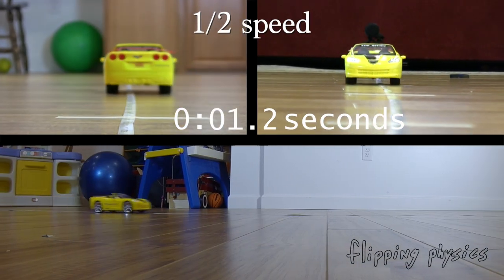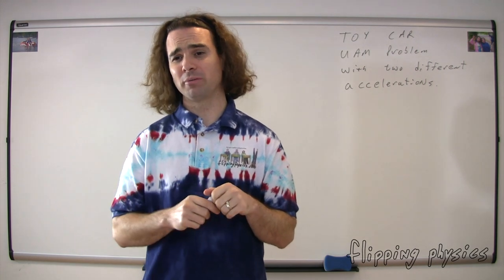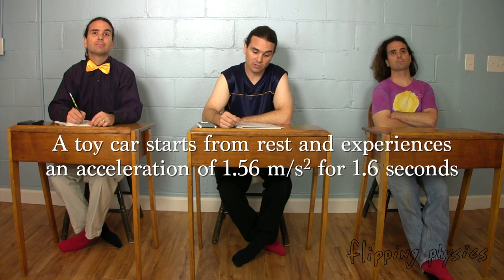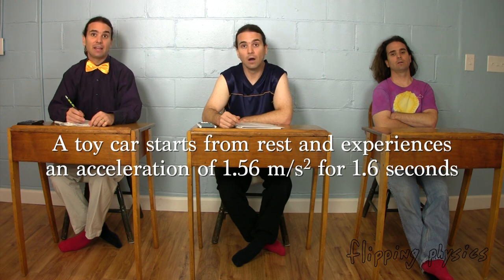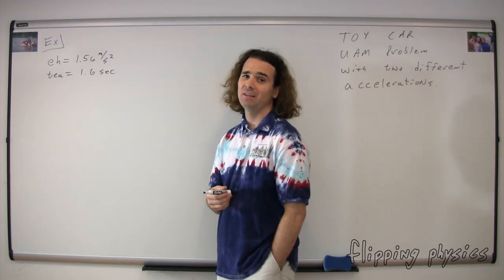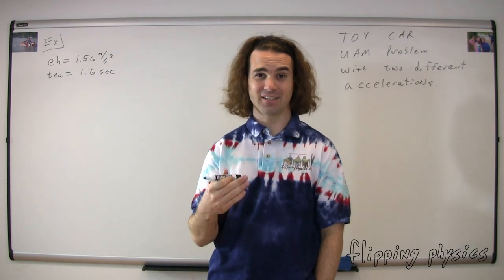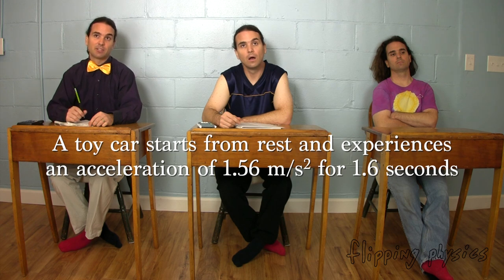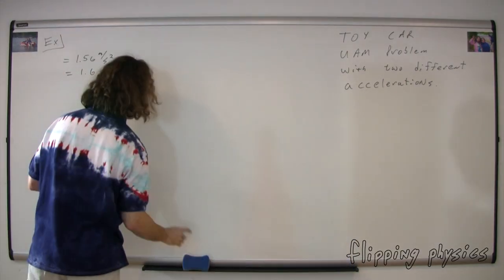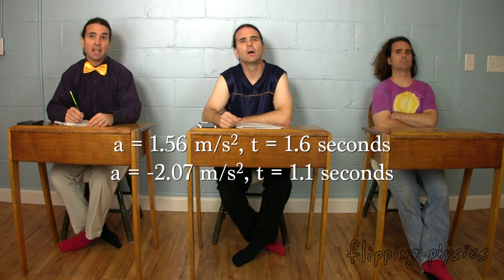Mr. P.: All right, now let's translate the problem to physics. Bobby, could you please read again and Billy, could you please translate? A toy car starts from rest and experiences an acceleration of 1.56 meters per second squared for 1.6 seconds and then... Please stop. Acceleration equals 1.56 meters per second squared and time equals 1.6 seconds. And then brakes for 1.1 seconds and experiences an acceleration of negative 2.07 meters per second squared. Time equals 1.1 seconds and acceleration equals negative 2.07 meters per second squared.